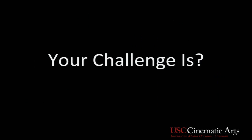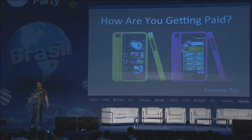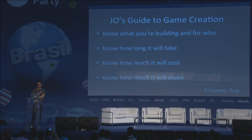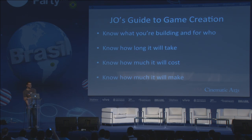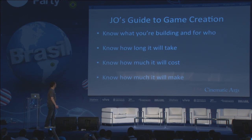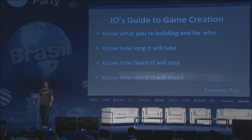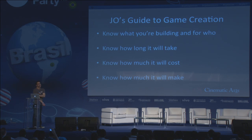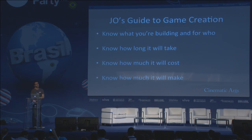So your challenge: how do you get paid? Basically four simple steps. You need to know what you're building and for whom. You need to know how long it's going to take. You need to know how much money it will take and how much you think it might make back — because you do want to get paid. This feeds into what I call the outliers trap.